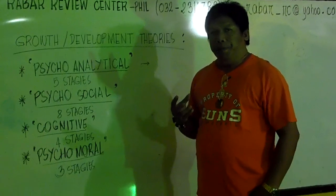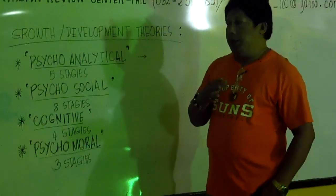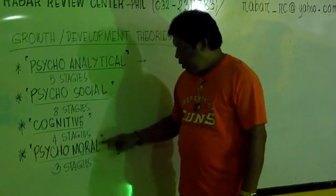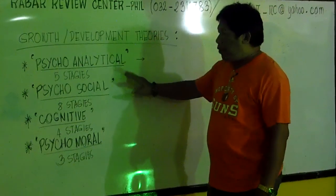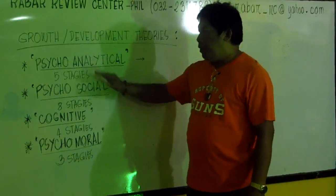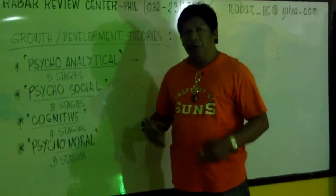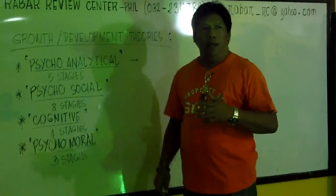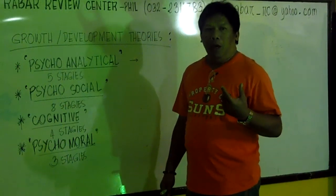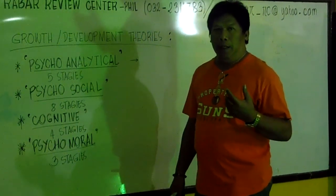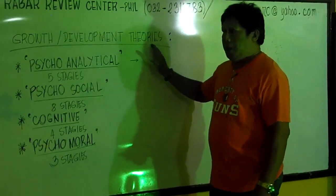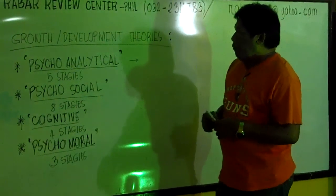How a child developed relative to his growth. We have here four theories for growth and development of a child. Remember, these are theories made by people — we call them theorists or psychologists regarding the growth and development of a child.